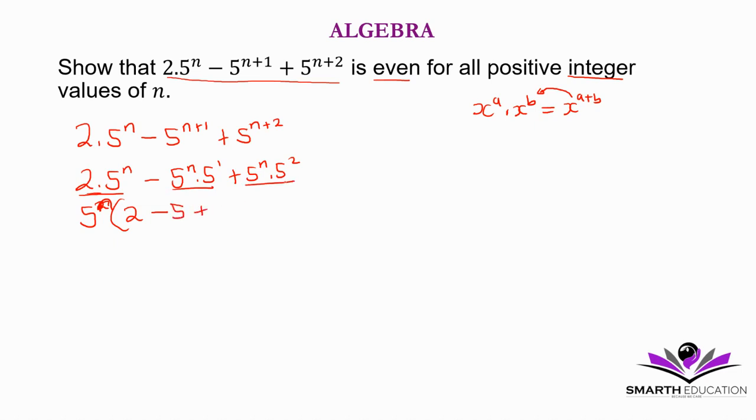Then plus, this divided by 5 to the power n is 5 squared. Now 5 to the power n, then 2.